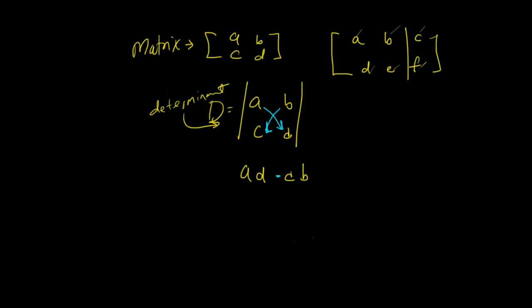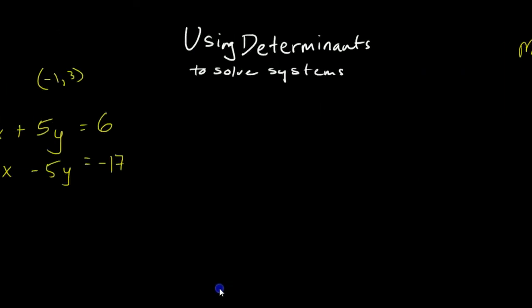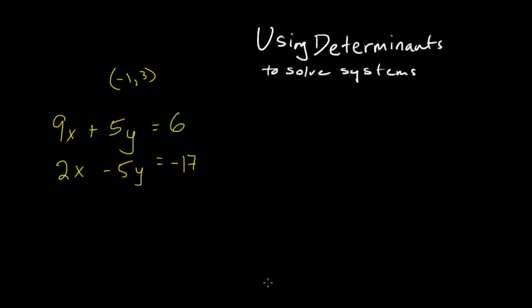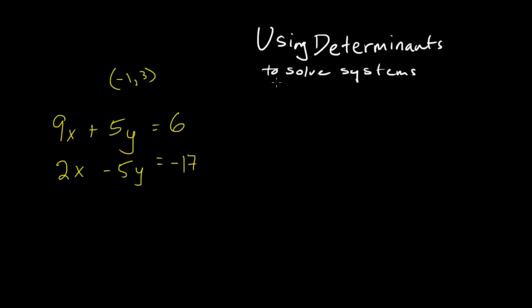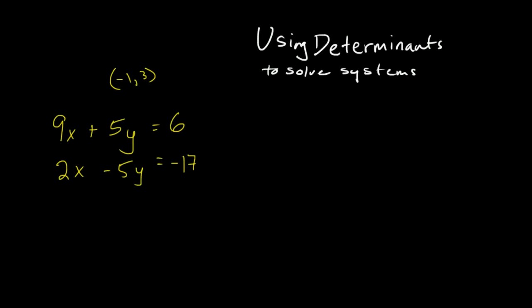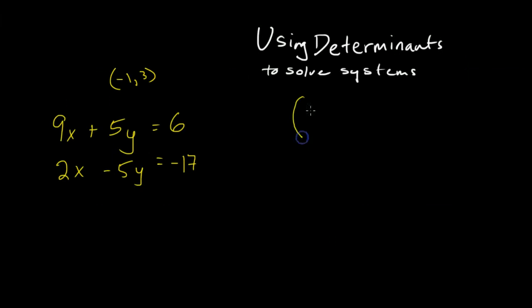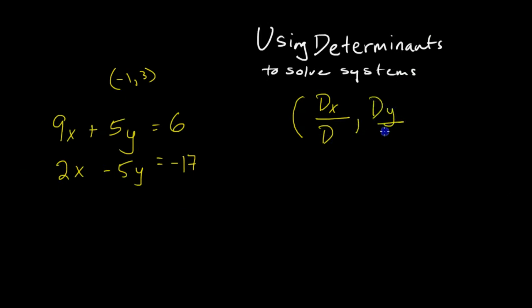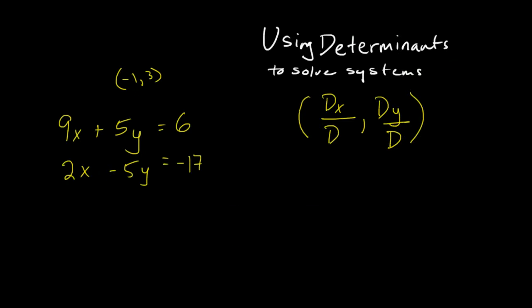Now, why is that important for us and for solving our systems of equations? Well, when we have a system of equations, then our solution will always be, if it has a solution, the determinant of x divided by a common determinant and the determinant of y divided by the same common determinant. Let's just see what that means.